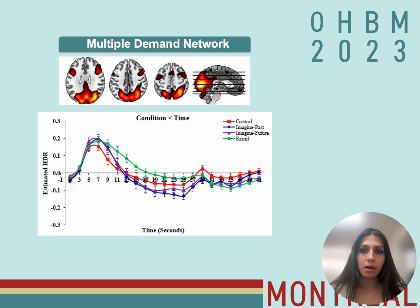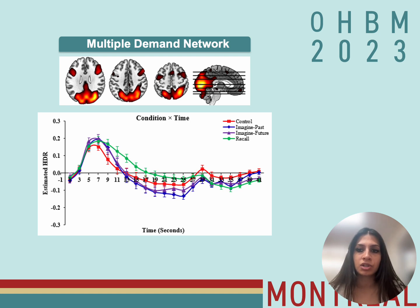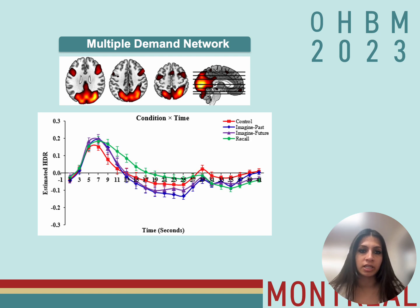Another component we found was the multiple demand network, a network thought to be responsible for directing attention towards environmentally relevant stimuli and directing focus to sequentially solve tasks by dividing them into subtasks. In our study, the multiple demand network showed a hemodynamic response peak at the beginning of each trial when participants were presented with task stimuli and had to pay attention to them. As the task progressed, the multiple demand network exhibited a mid-trial deactivation in all conditions, likely because another network — the maintaining internal attention network — was required at that time.